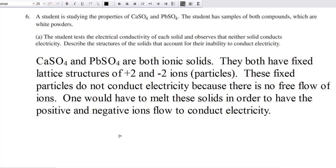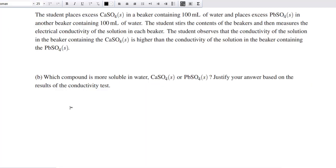And we want to take a look at the structures of the solids. The structures of solids that account for their inability is they have fixed lattice structures of positive 2 and negative 2. They're not flowing. There's no free flow of the ions.